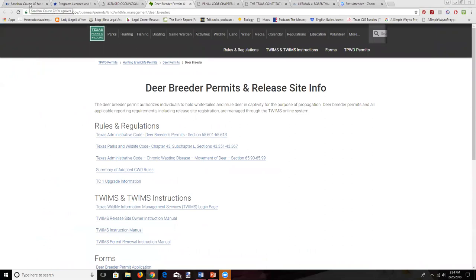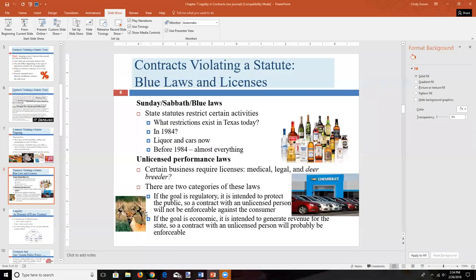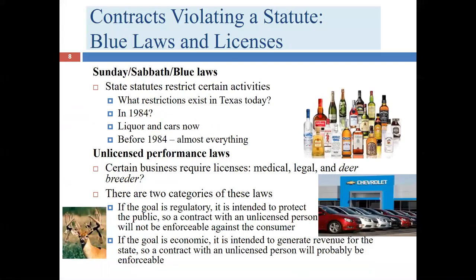Another example that requires a permit is deer breeding — we'll talk more about that in a moment. These are just examples of industries where you need to have a license. Obviously you need a license to be a doctor — we'd all see that coming — because if anyone could call themselves a doctor, it would be hard for lay persons to figure out who's actually going to provide appropriate medical care.